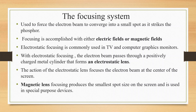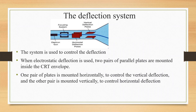The advantage of the magnetic lens is that it produces a very small spot size. Next is the Deflection System, which consists of two pairs of plates.